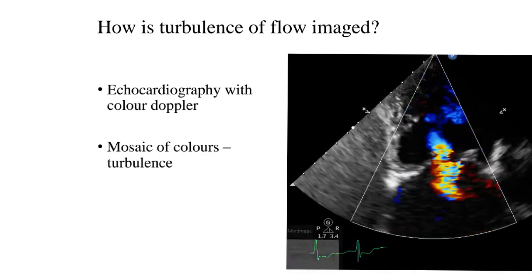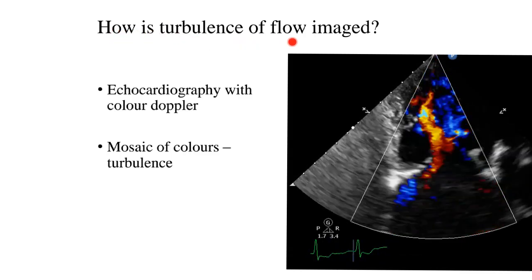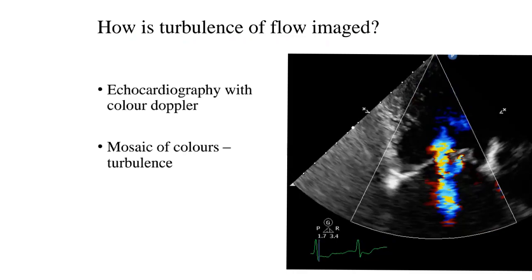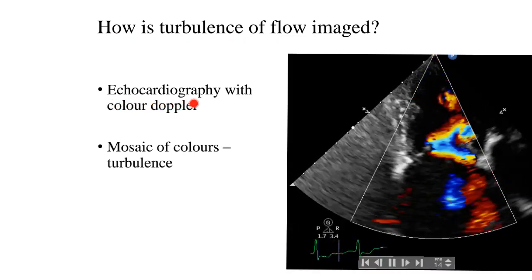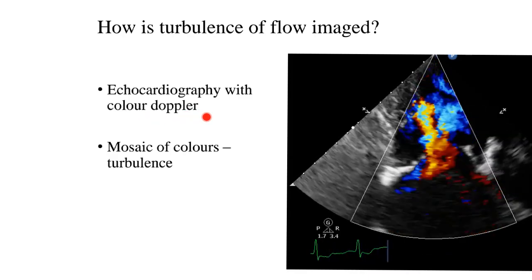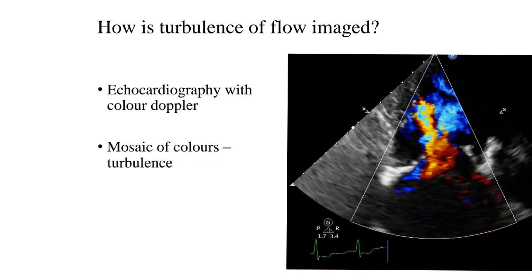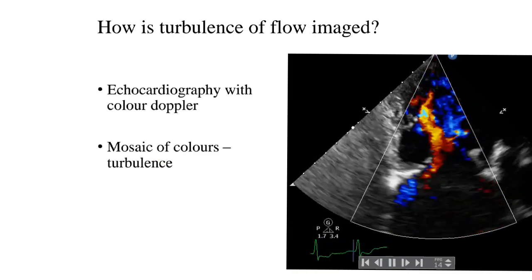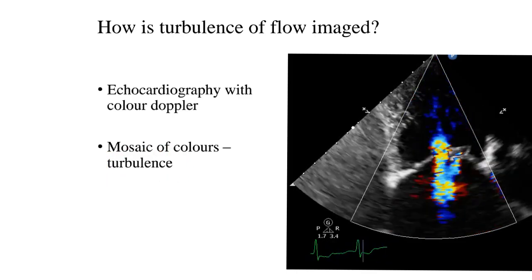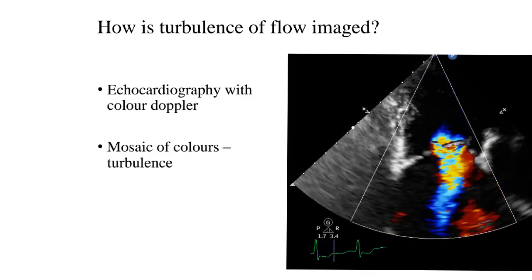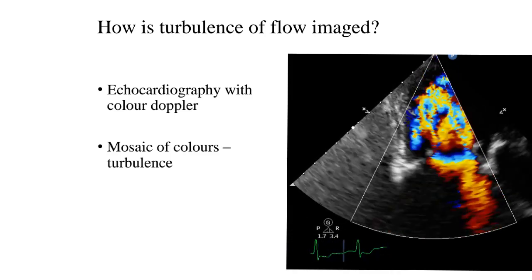Now that we have been introduced to the concept of blood turbulence, how is turbulence of flow imaged? In real life, on a normal basis, we use echocardiography with color Doppler effects to see the turbulence of blood. What we see is a mosaic of colors — a mixture of different colors — to indicate that the blood is undergoing turbulence, either because of a stenotic lesion across a valve, or because of a leaking or regurgitating valve.